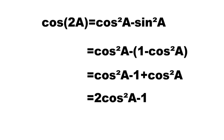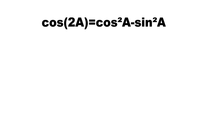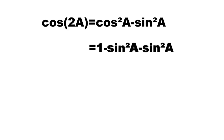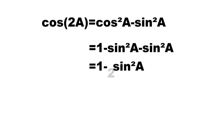We can also simplify for cosine: cosine(2a) = (1 - sin²a) - sin²a, so this is equal to 1 - 2sin²a.